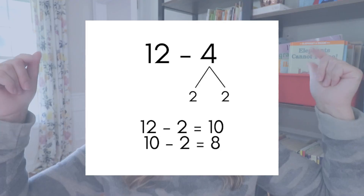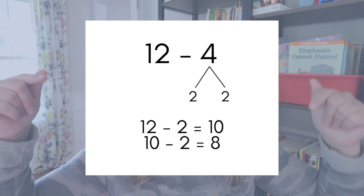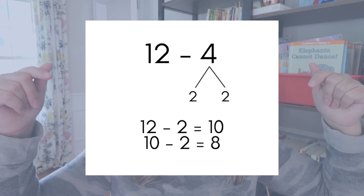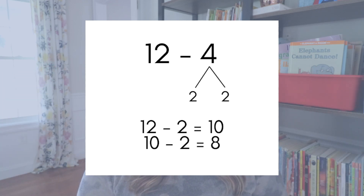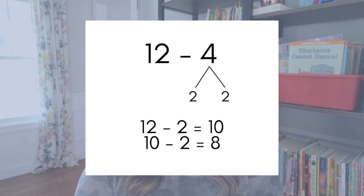Decomposition can also be used with subtraction. When using decomposition to help solve subtraction problems, students will find it most beneficial when subtracting to a friendly number. Here's an example: 12 minus 4. Students could break this 4 down into 2 and 2, so instead of counting back four spaces, they know that 12 minus 2 equals 10 — that's a friendly number — and then very quickly 10 minus 2 more equals 8, so 12 minus 4 equals 8.